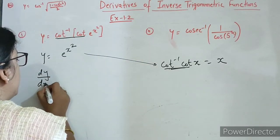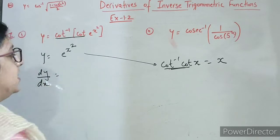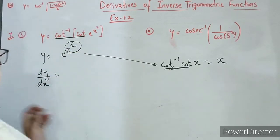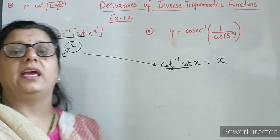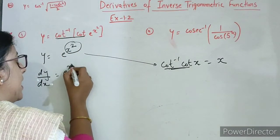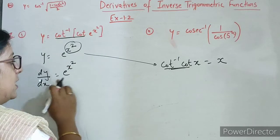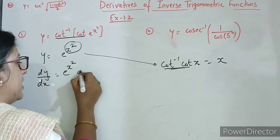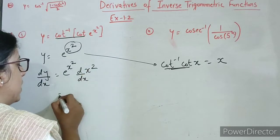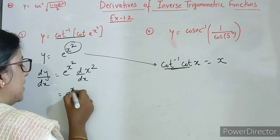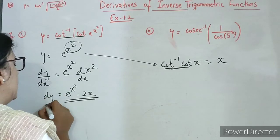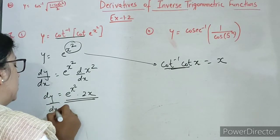Now differentiating on both the sides, you have to use here chain rule. e to the power x ka derivative e to the power x. So e to the power x square ka derivative is e to the power x square into d by dx of x square. So final answer is e to the power x square into 2x.